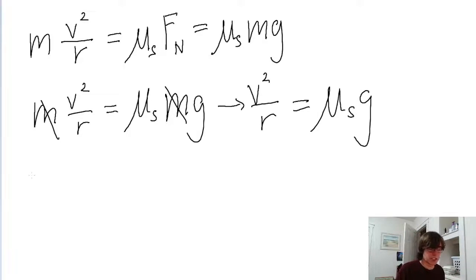Now the coefficient of static friction is what we're trying to find. So let's rewrite this equation algebraically to solve for mu sub s. To do that, we just divide both sides of the equation by g. So we have v squared divided by r g.